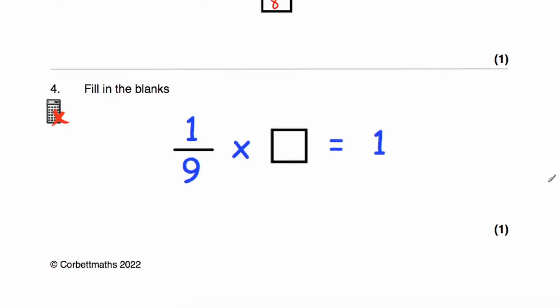Question 4: a ninth multiplied by something is equal to 1. If we wanted to make a whole, we would need 9 ninths. So a ninth multiplied by 9 equals 1, and the reciprocal of a ninth is 9 — written as 9 over 1, which is 9.